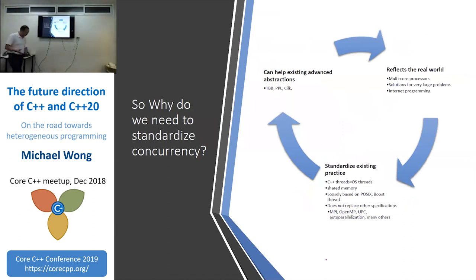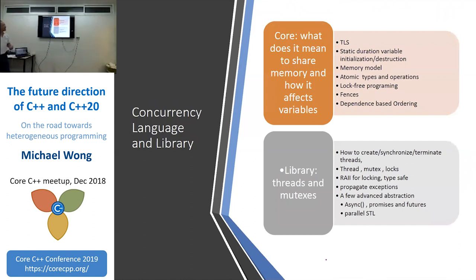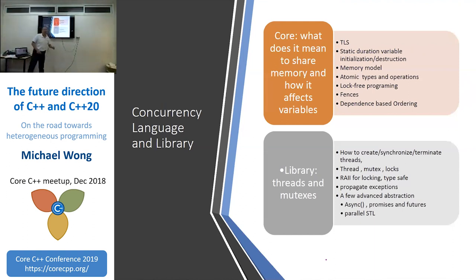Even back in 2003 when I first started joining, people first came and said: wouldn't it be great if C++ also supported parallelism? And we said yes. We had many meetings to understand how we could catch up. Even back then, multicore processors were already all over the place, and yet C++ was still a decade back without any parallel processing capabilities.